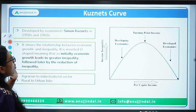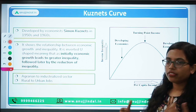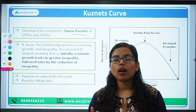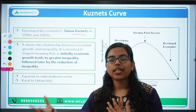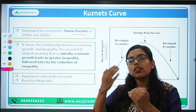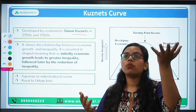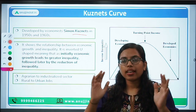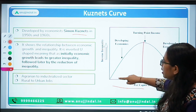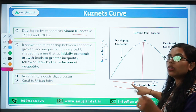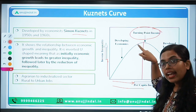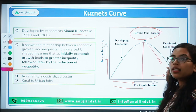Now let's talk about the Kuznets curve. This concept was given by American economist Simon Kuznets in the 1950s and 60s. This curve talks about the relationship between economic growth — specifically per capita income — and inequality. As income increases, inequality in the economy also initially increases. This is partly due to the shift from the agrarian sector to the industrialized sector, and from rural to urban areas, creating a divide that leads to inequality.